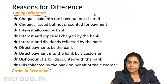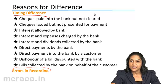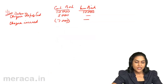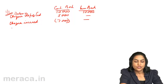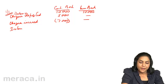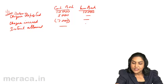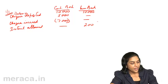Interest allowed by the bank means interest which is credited to the account holder's account by the bank. The account holder gets to know about this only when he receives the bank statement. So interest allowed will be entered in the passbook on the 1st but was not entered in the cashbook. As a result, with interest of say 200 rupees, the passbook balance has gone up by 200 but there is no such record in the cashbook.